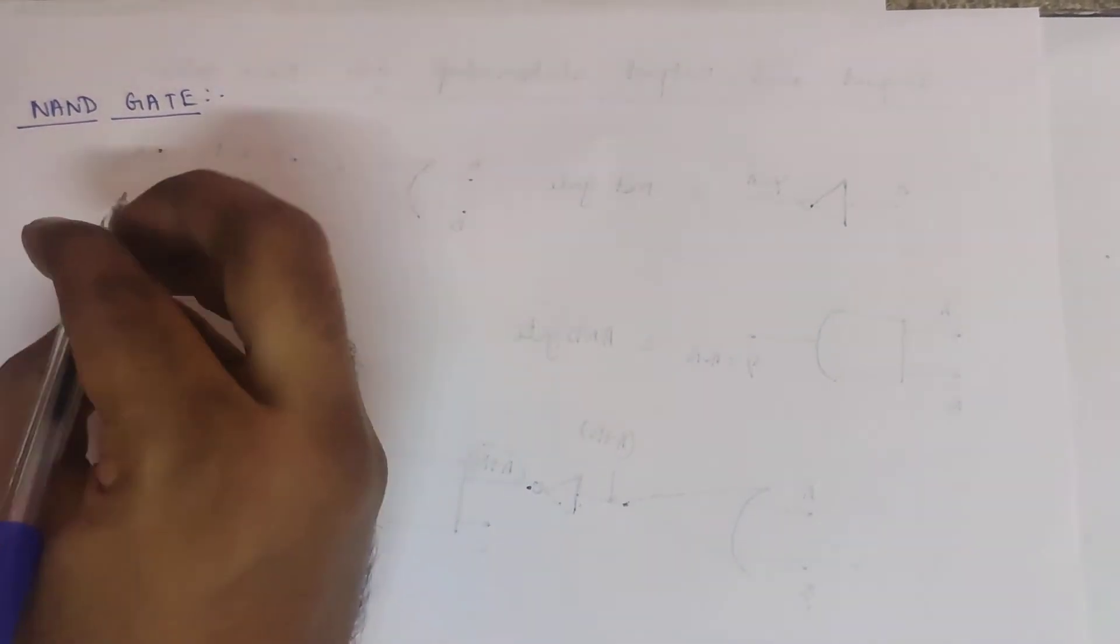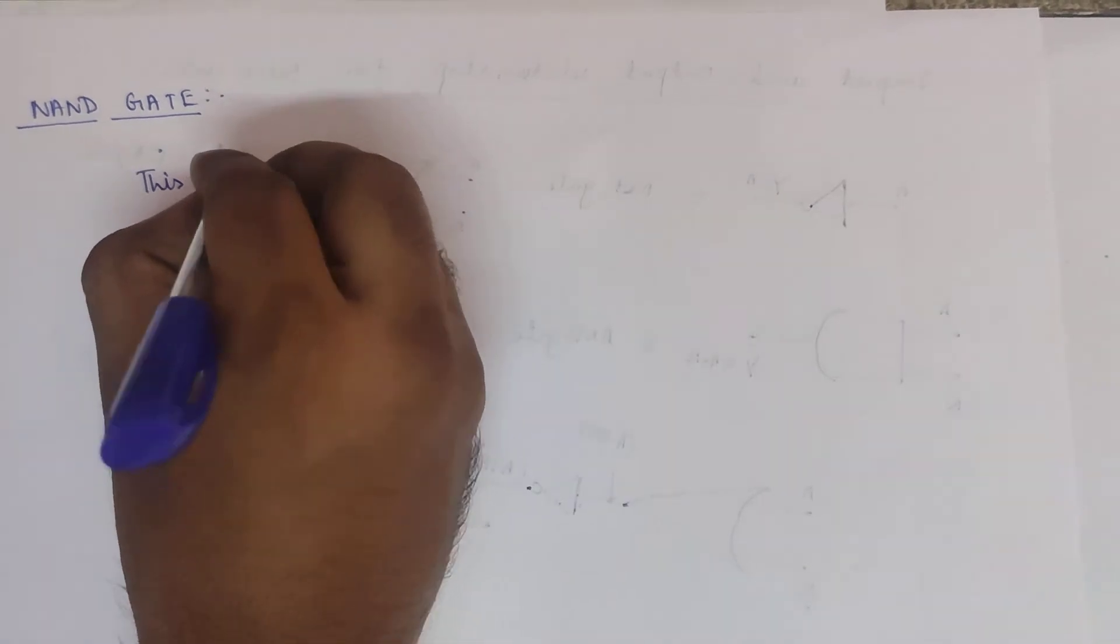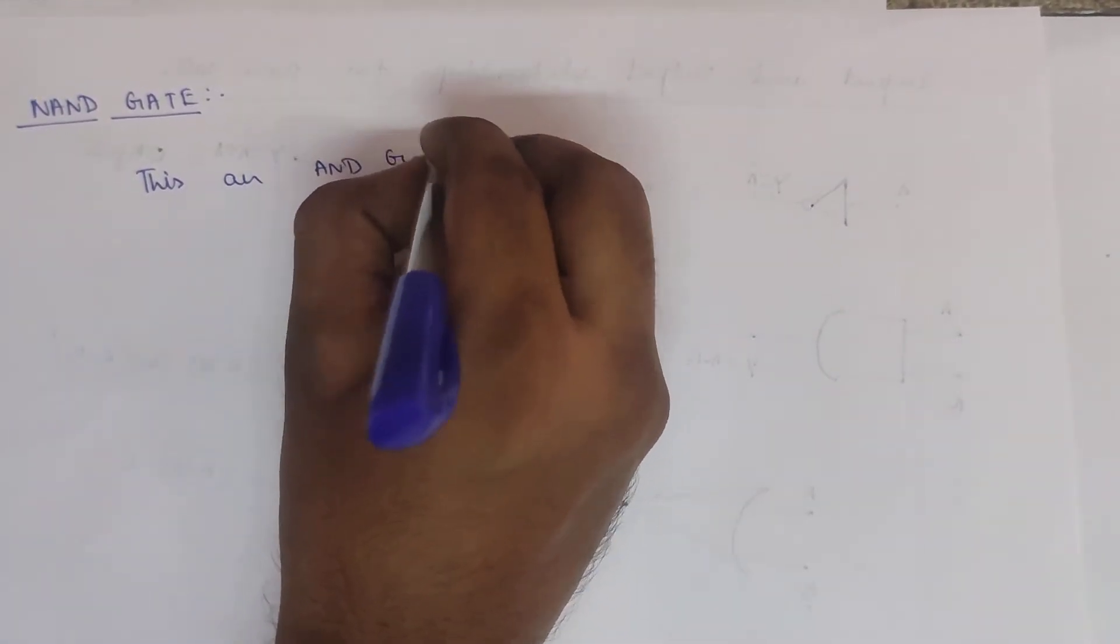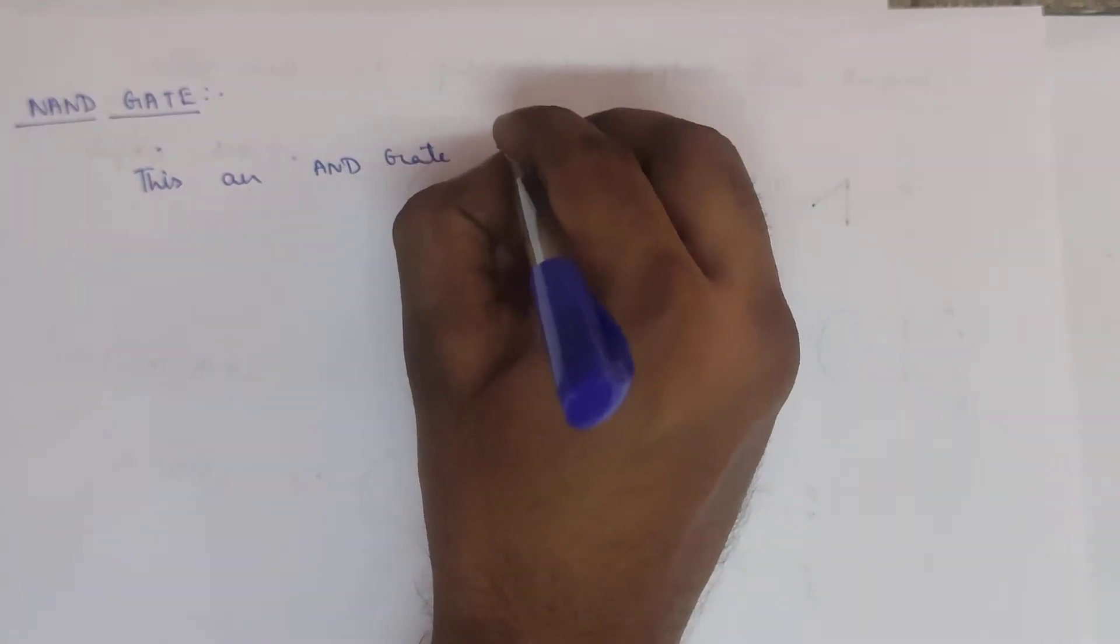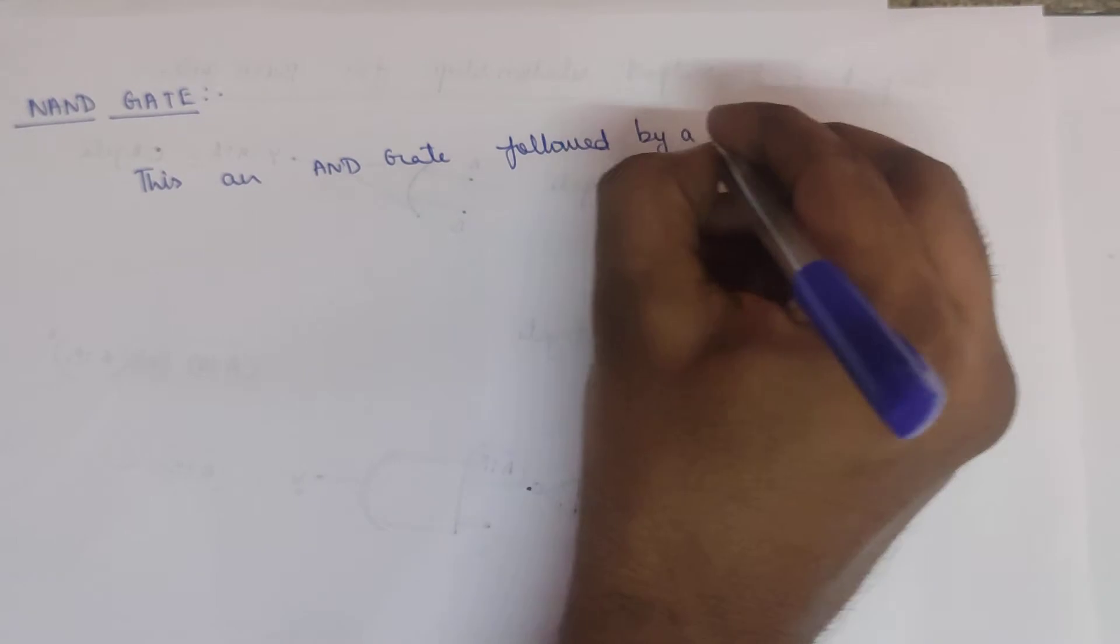Okay, next part about the NAND gate. The NAND gate is called a universal gate. This is an AND gate followed by a NOT gate - another AND gate and NOT gate combined.